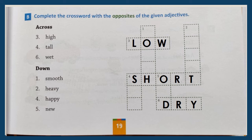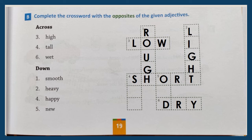Now the downward entries. Number one down — smooth, opposite is rough, R-O-U-G-H. Number two down — heavy, opposite is light, L-I-G-H-T. Number four down — happy, opposite is sad, S-A-D. Number five down — new, opposite is old, O-L-D. Great, all of you could do it!